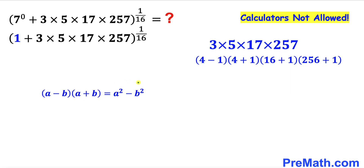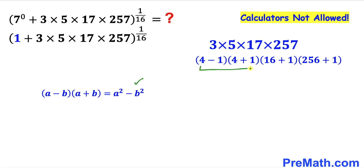Now let's recall this famous identity: (a minus b) times (a plus b) is always equal to a squared minus b squared — in other words, the difference of two squares. We are going to leverage this identity to manipulate these numbers.